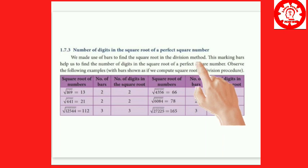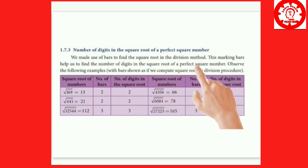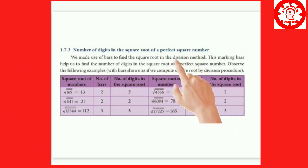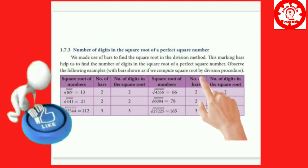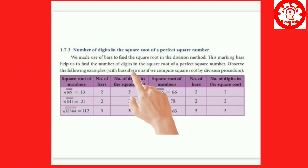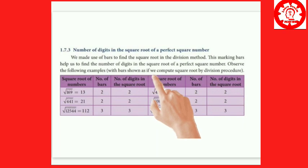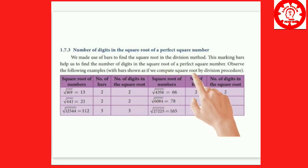The number of bars in a perfect square helps us find the number of digits in its square root. Observe the following examples with bars shown as if we compute the square root by the division procedure.